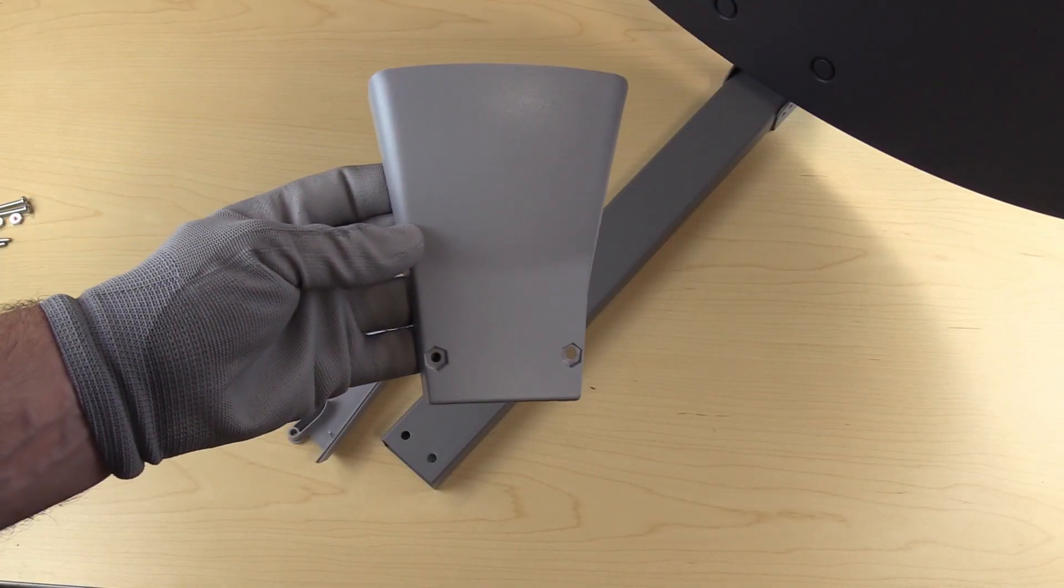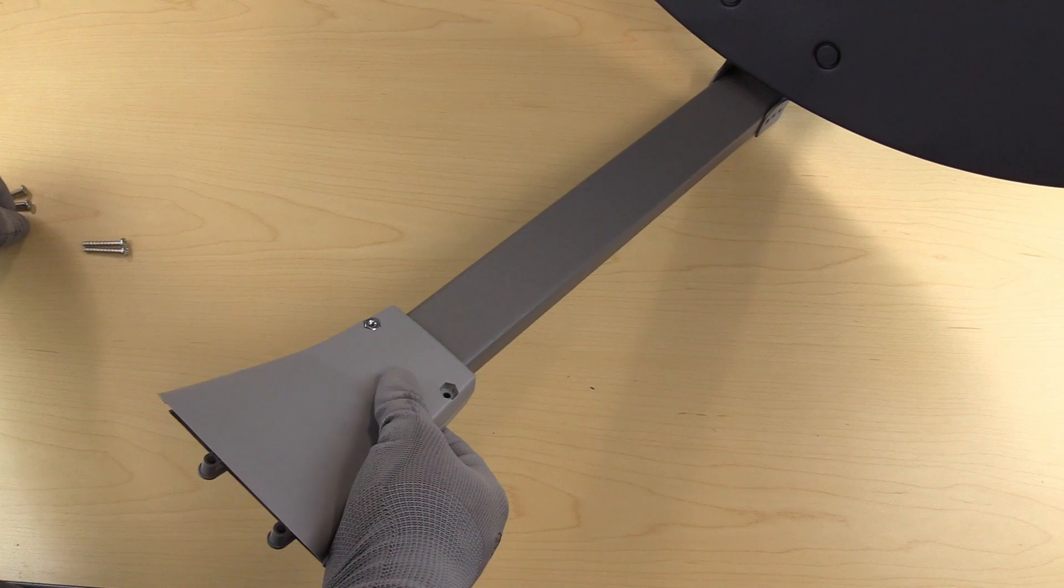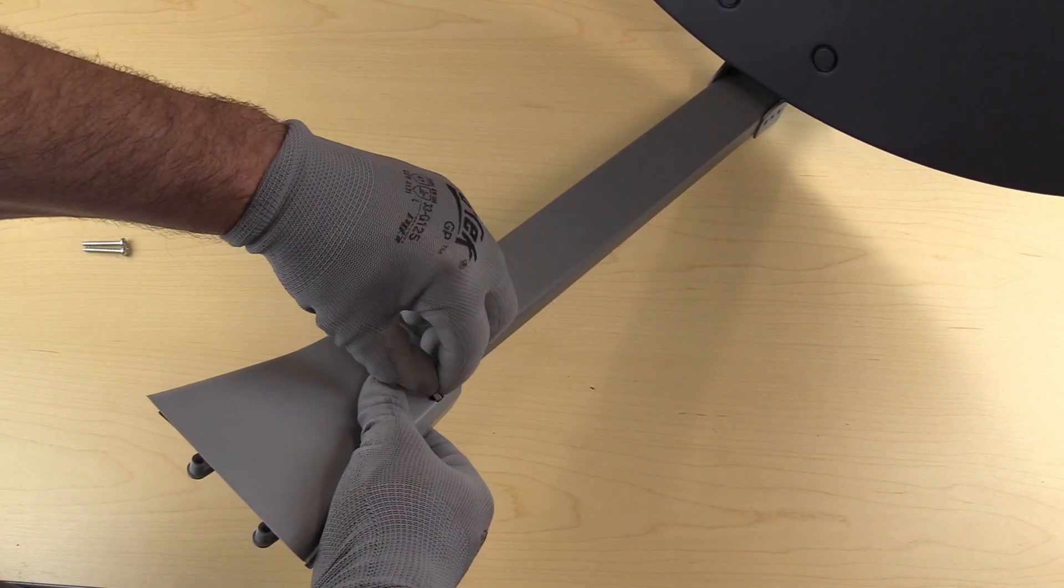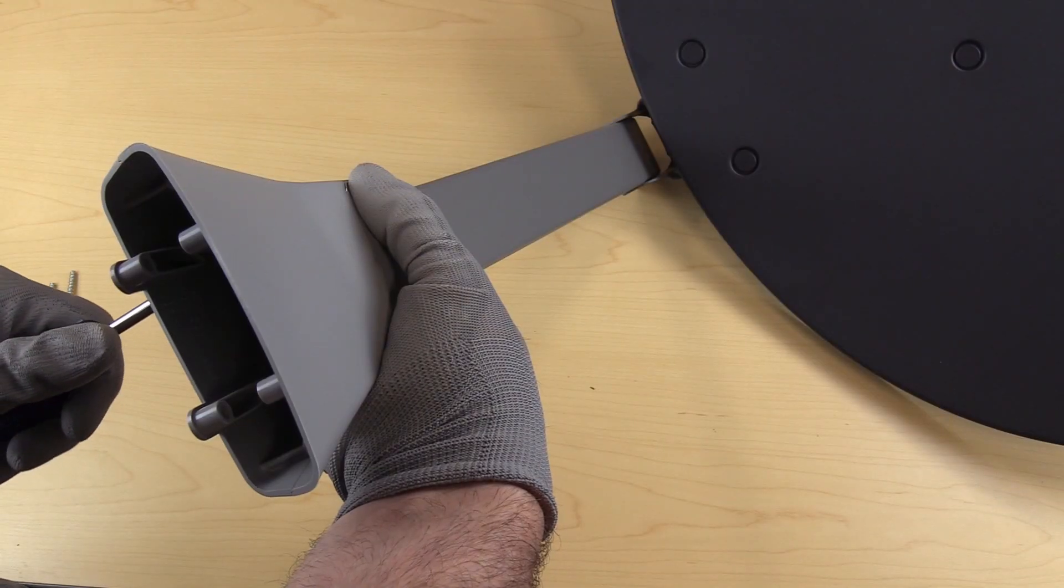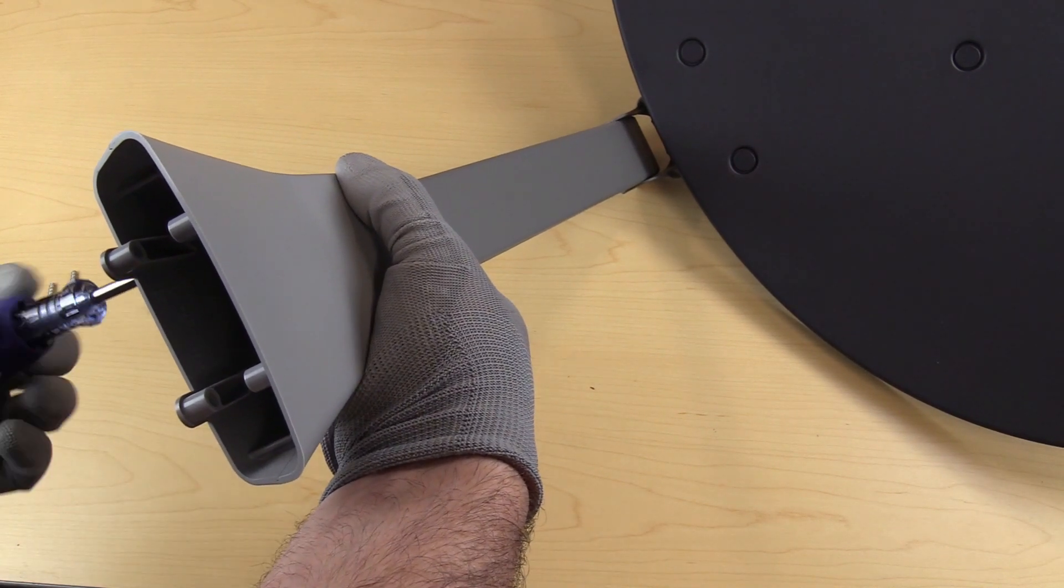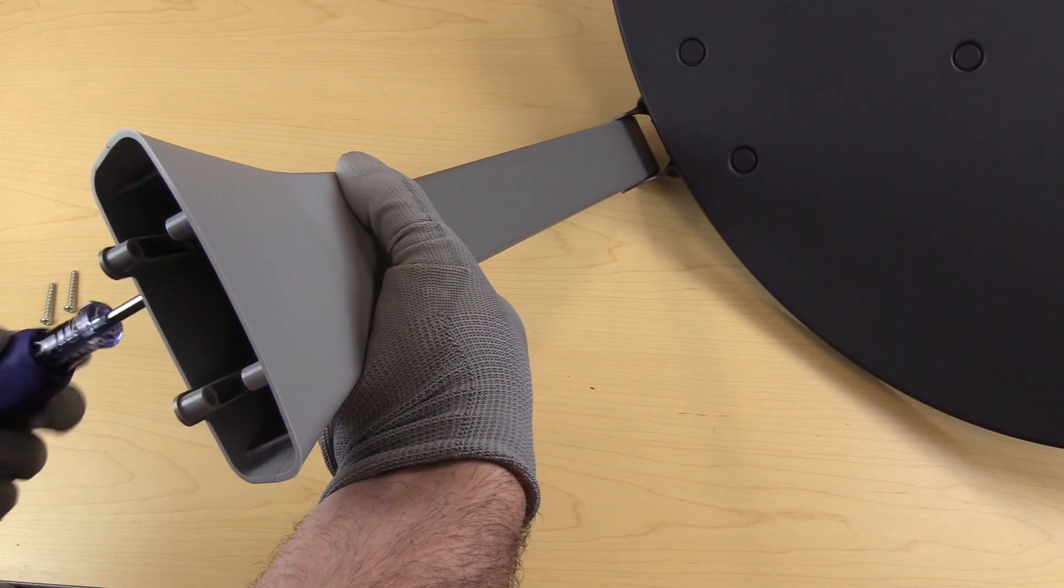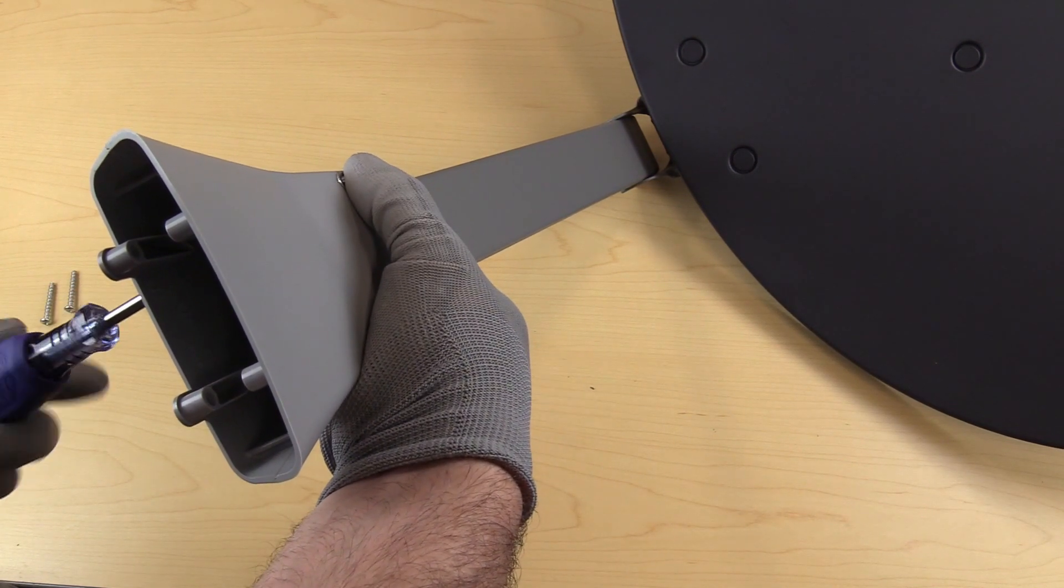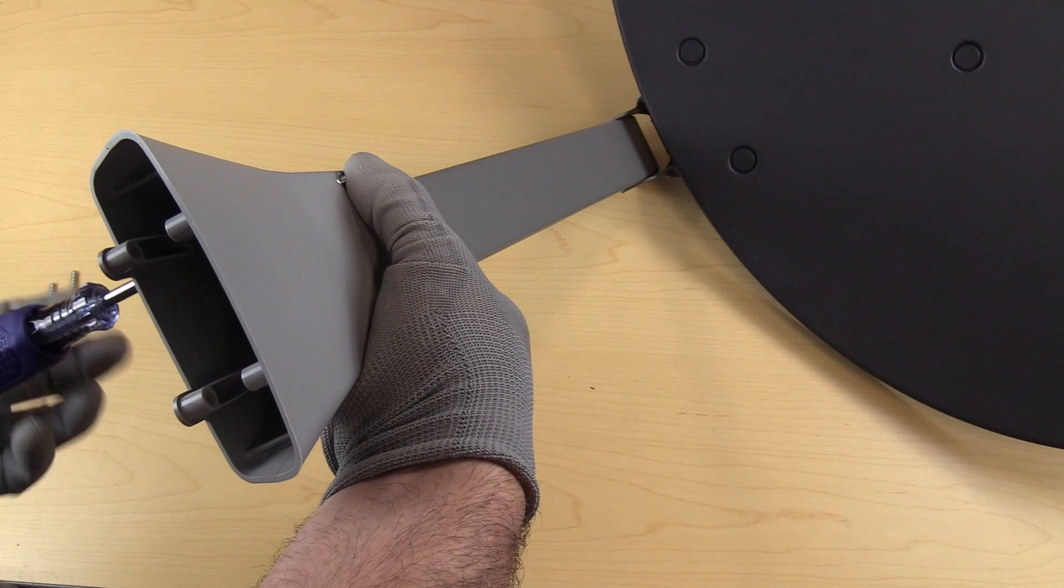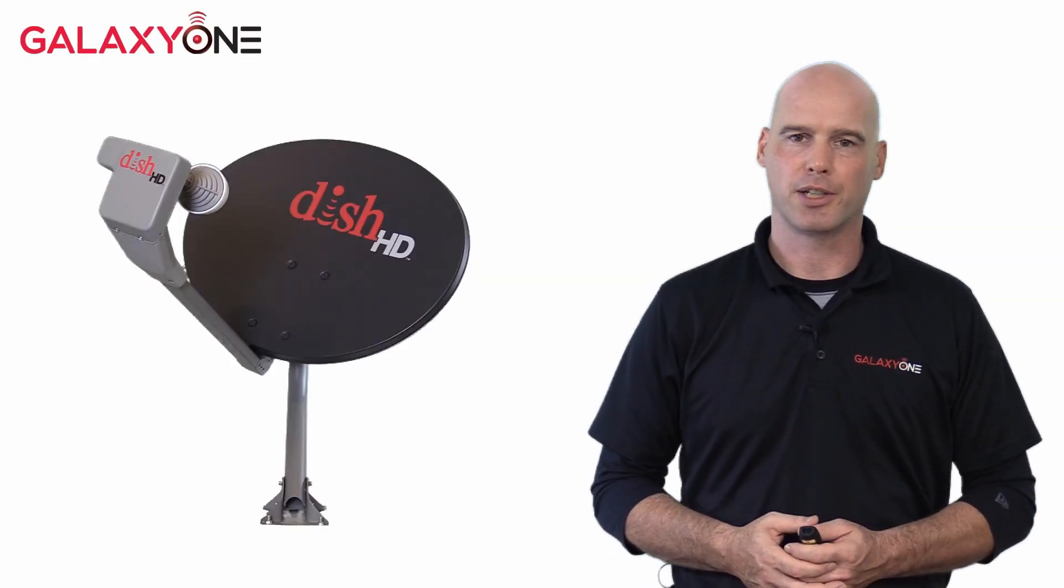On the top piece you can see two nut inserts. Grab the two smaller nuts from the hardware kit and place them into the nut inserts. Use your Phillips screwdriver to insert the two machine screws from the bottom of the LMBF bracket. Tighten the two screws using your Phillips screwdriver. Remember to make sure the alignment pins stay lined up with the alignment pin holes on the LMBF arm. That's it. The dish is assembled and ready to be installed.